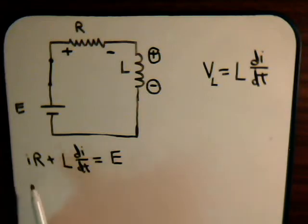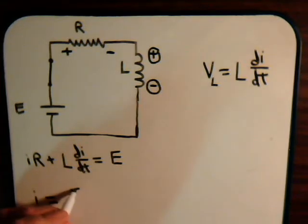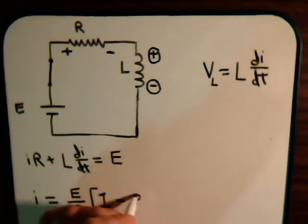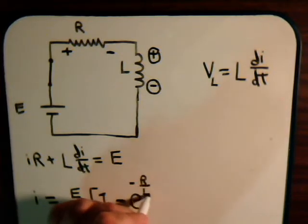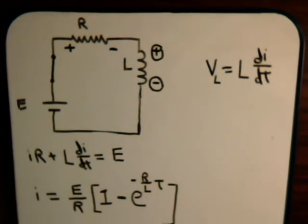And the equation that we derived in our last video when we solved the equation that we get for I when we solved this differential equation is that I, and this is the current flowing through the coil now, that equals E over R times 1 minus e to the minus R over L multiplied by t, where t of course is the time.